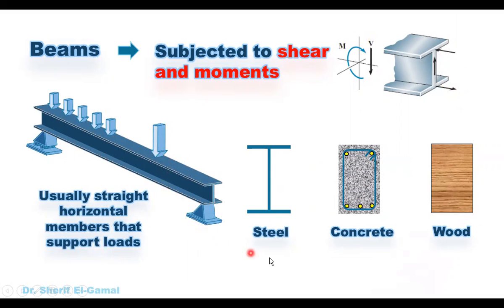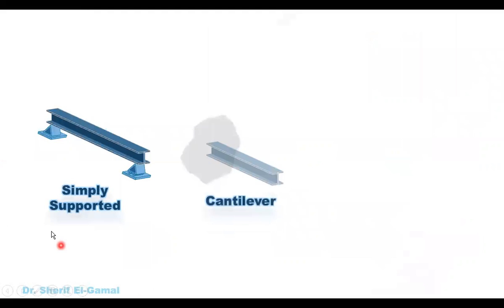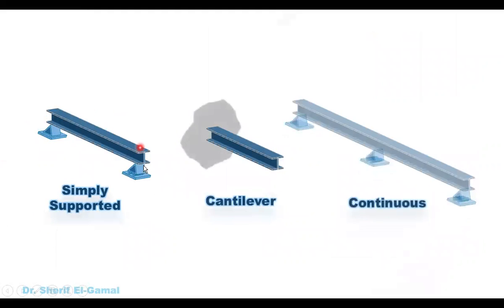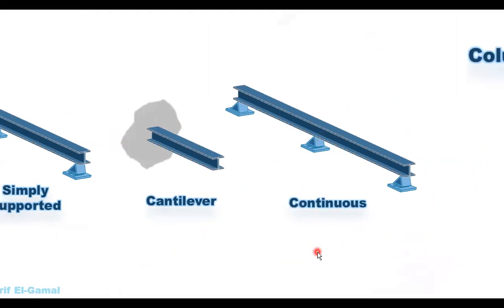Beams are usually fabricated from steel, reinforced concrete, or wood. Beams can be simply supported, cantilever beams, continuous beams, or a combination of any of the three types.